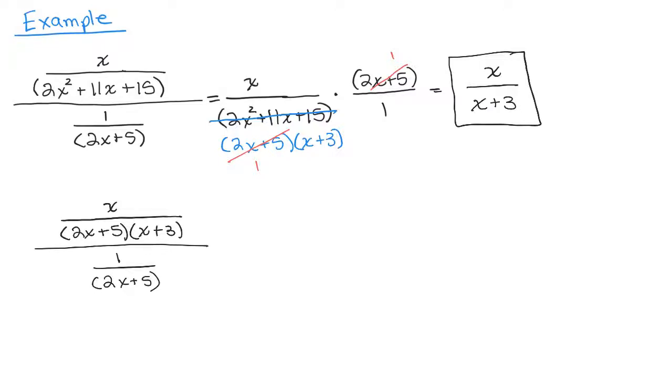And now the second method, you multiply both the numerator and the denominator by the least common multiple of all the denominators, which is 2X plus 5 times X plus 3.